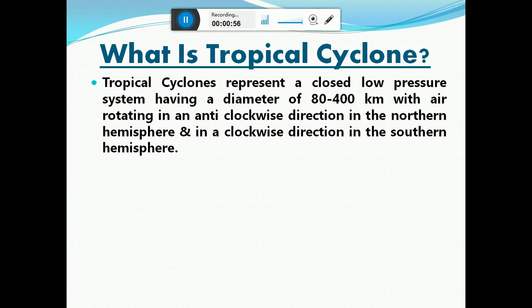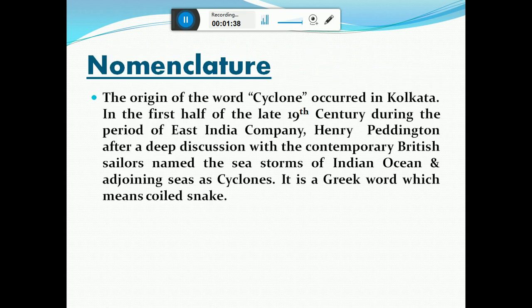First, we need to understand what a tropical cyclone actually is. Tropical cyclones represent a closed low pressure system with a diameter ranging between 80 and 400 km, though it may sometimes be less than 80 km or more than 400 km. The air moves towards the center in an anti-clockwise direction in the northern hemisphere and clockwise in the southern hemisphere. The term 'cyclone' originated in Kolkata, where Henry Paddington of the East India Company in the late 19th century named these sea storms of the Indian Ocean as cyclones — the word being Greek for 'coiled snake'.